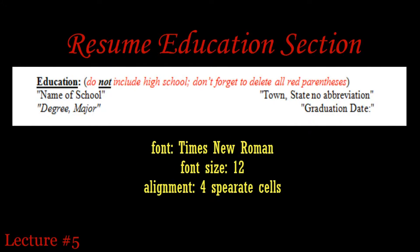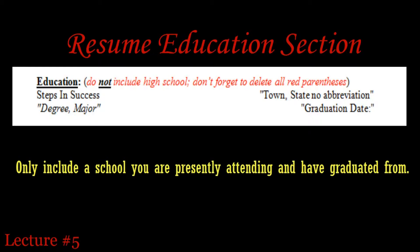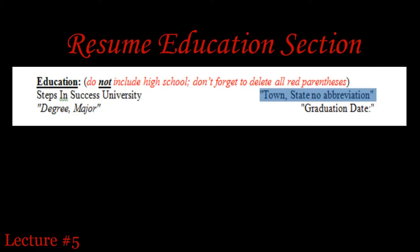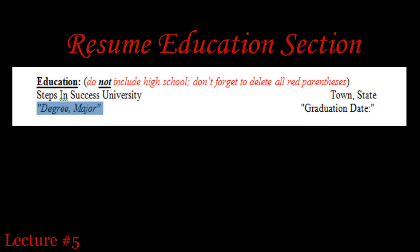The education section of this template has four cells for you to click on and type your information directly into. Place your mouse pointer in the middle of the name of school cell and type in the school you are attending or have graduated from. I don't think it's wise to include schools you did not graduate from. Next, click and type in the town and state of your school, but don't include the zip code and don't use state abbreviations. When typing in your degree and major, make sure you use the information on your diploma or in your college handbook. Include your grade point average if it is 3.0 or better.